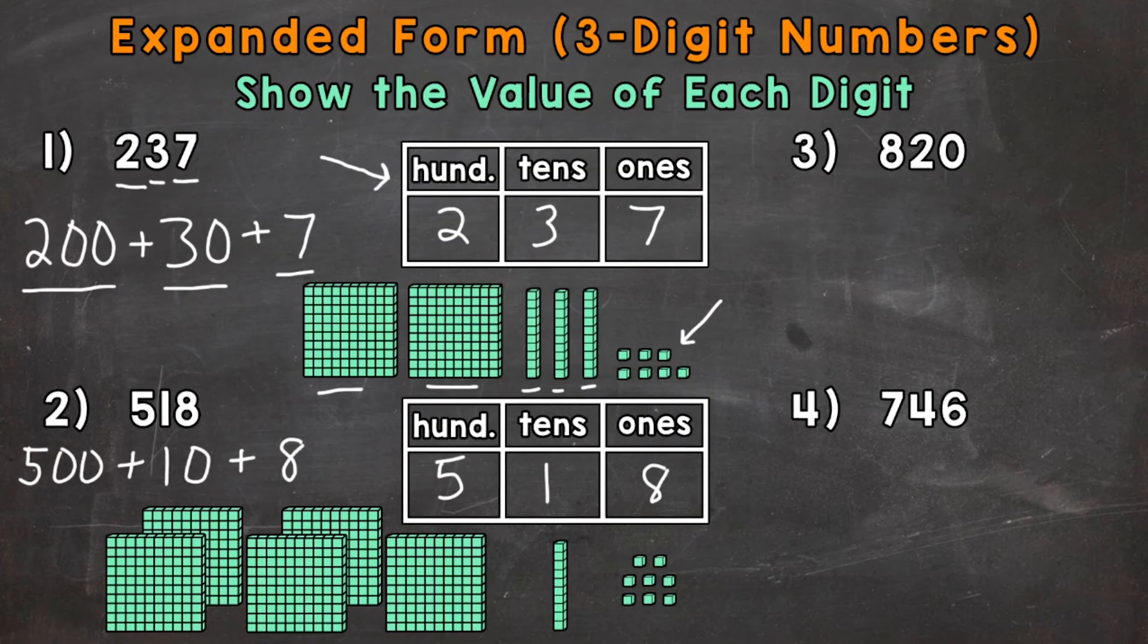So 500 plus 10 plus 8. On to number 3 where we have 820.